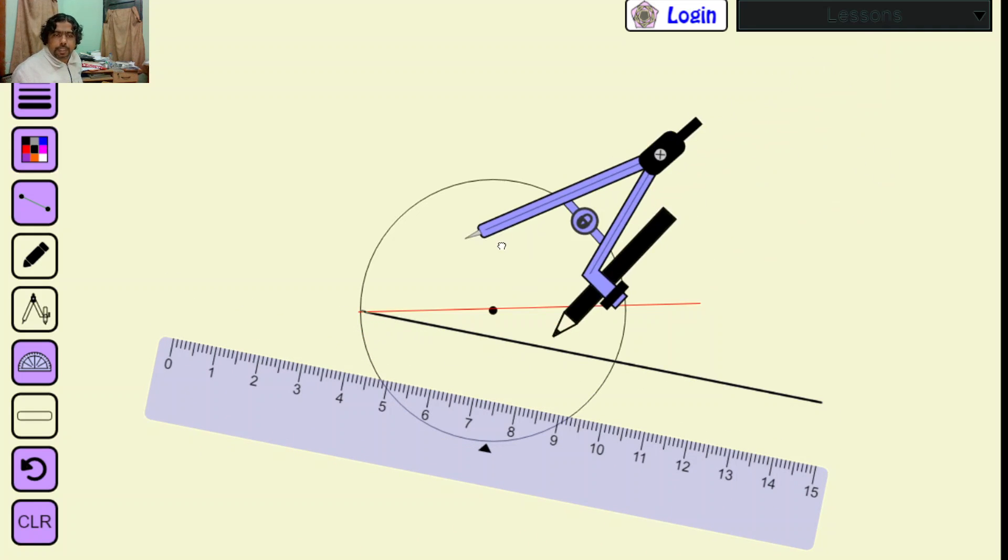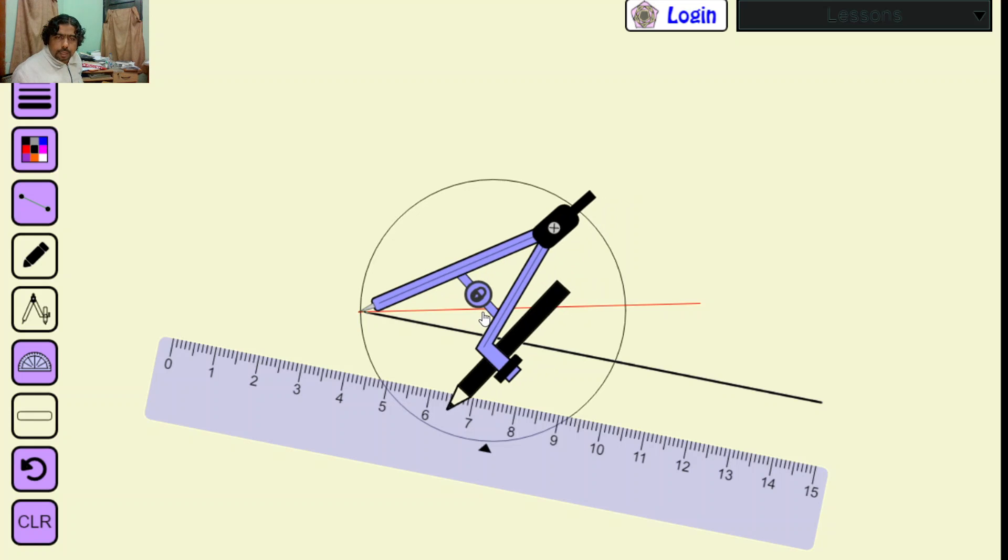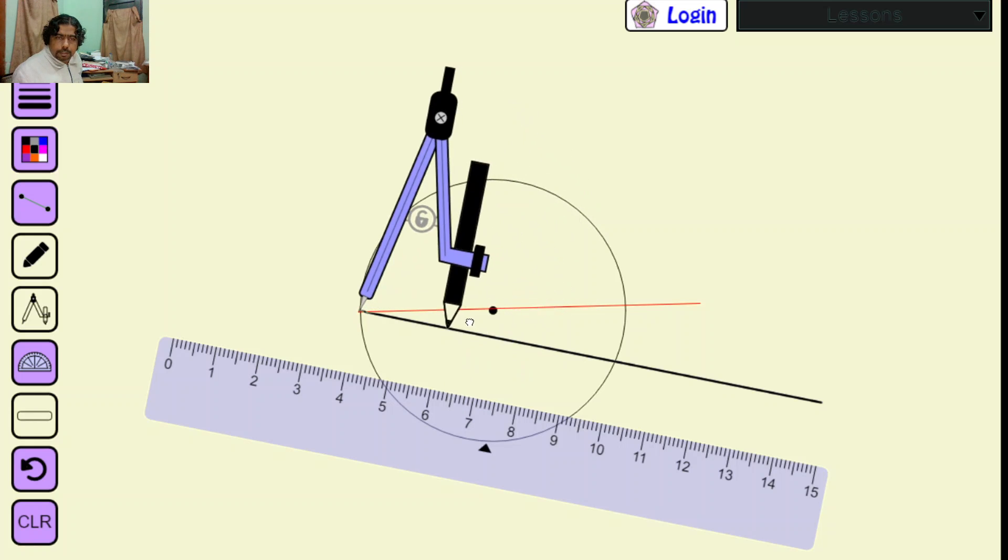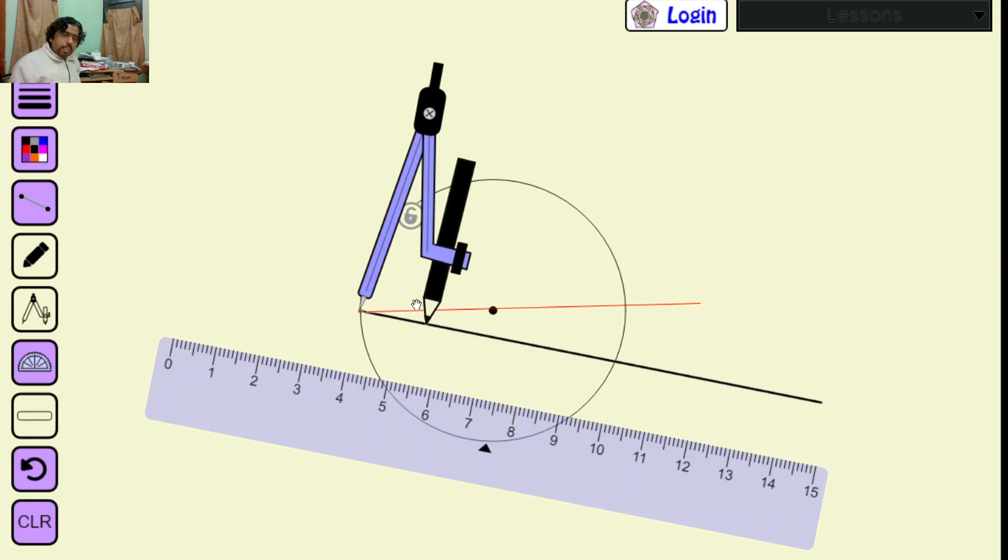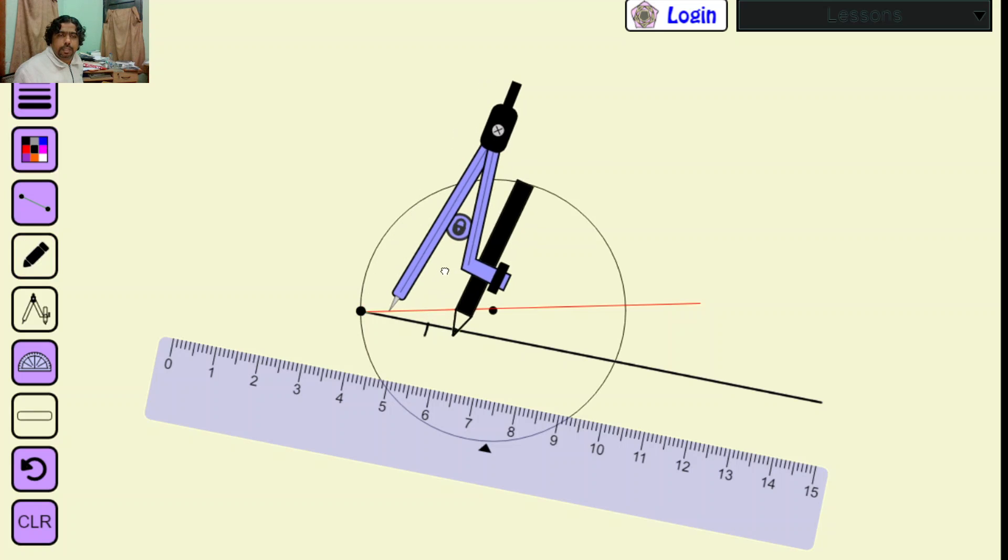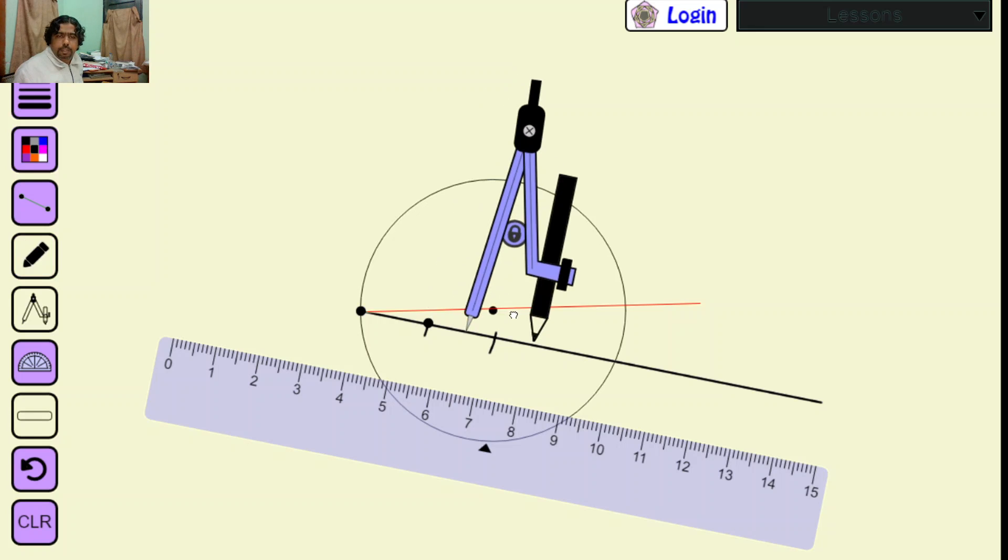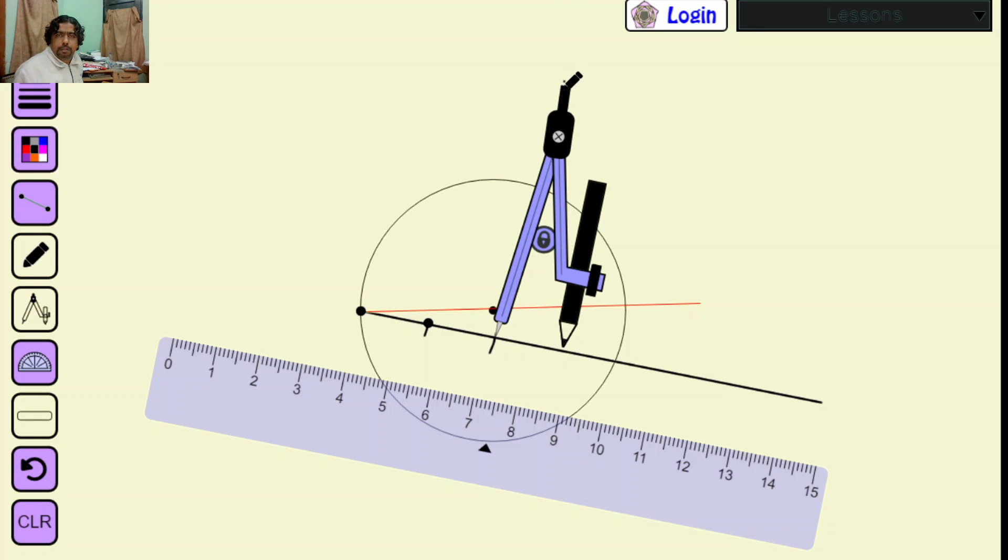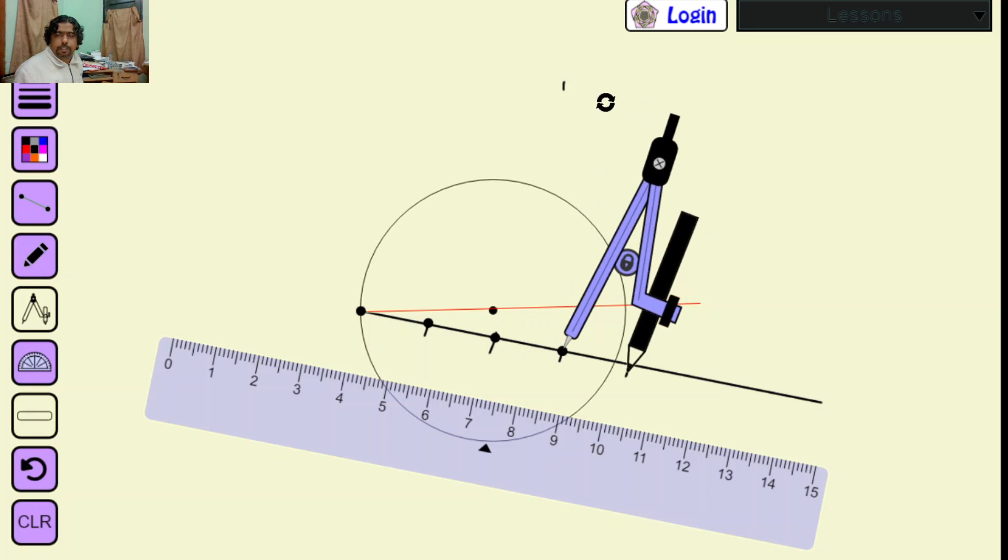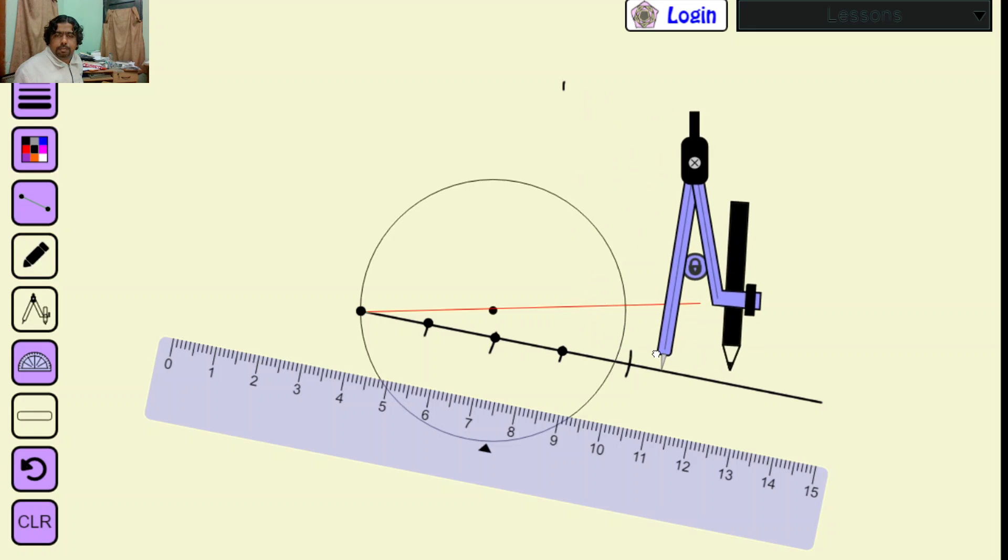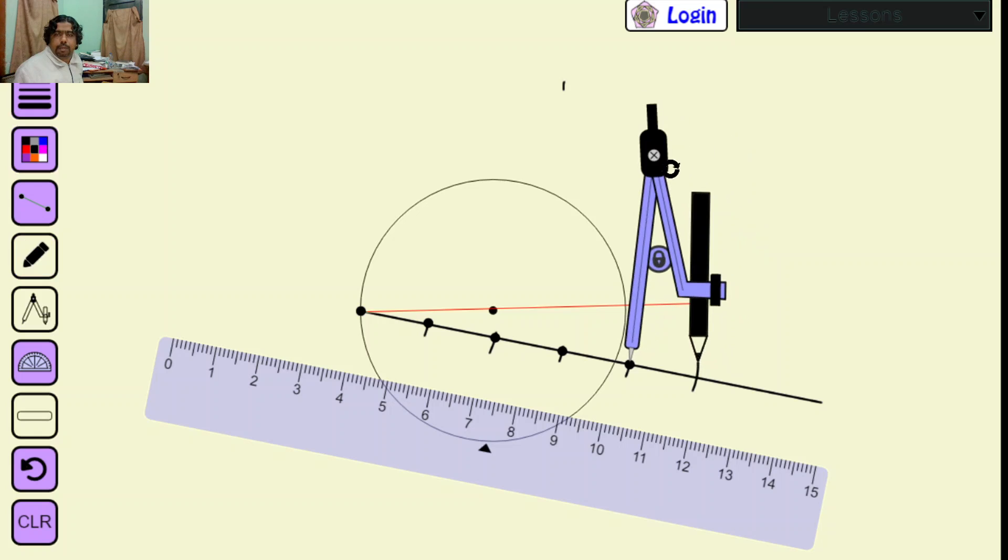Our objective is to divide this line into equal number. If I want to do a pentagon, then I will divide it into five.